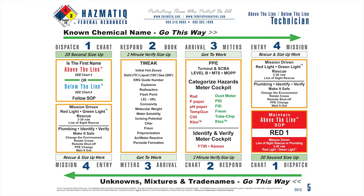We'll start with step number one. Step number one is a size-up. It asks: is my chemical above the line or below the line based on the first part of its name? We'll always start with above the line or below the line, and then if you notice at the bottom of that box, it says continue on chart three or chart four. So we'll go to three or four, and that completes step one, which is our size-up.